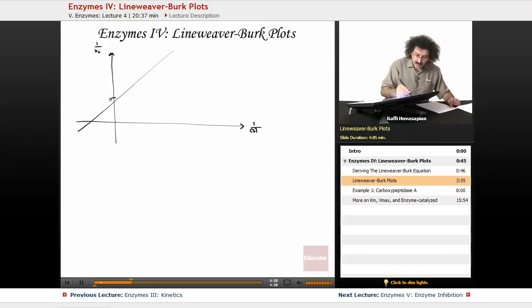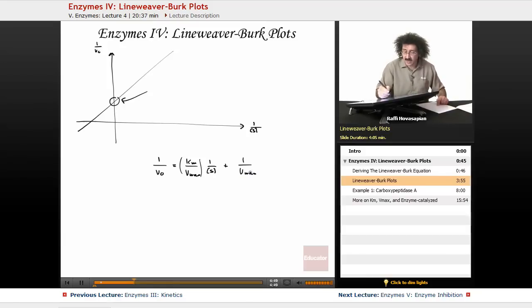The Y-intercept, well, let me actually rewrite the equation here again so we see it. So we had 1 over V0 equals Km over Vmax times 1 over S plus 1 over Vmax.